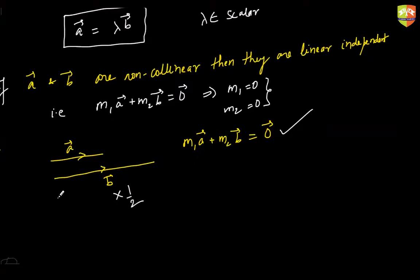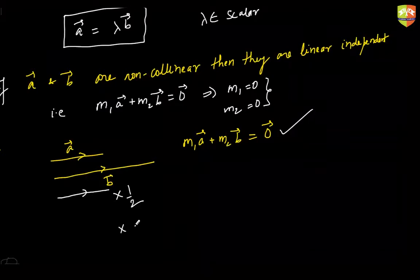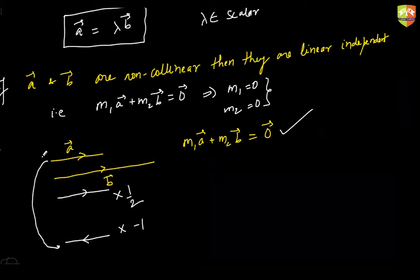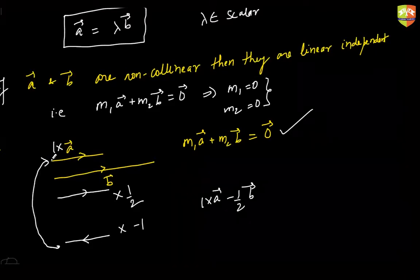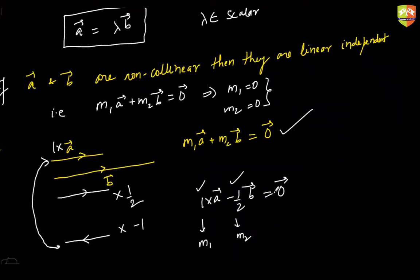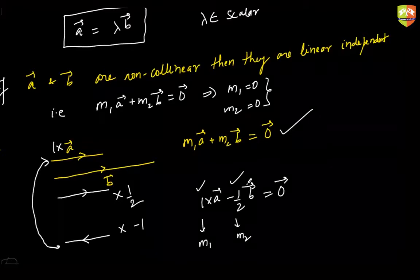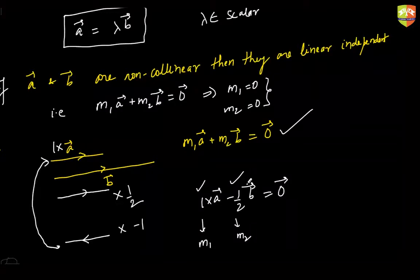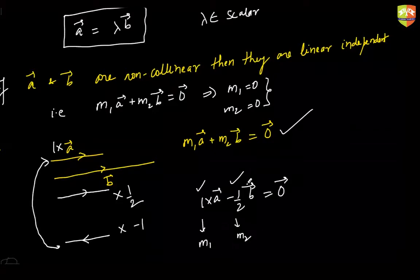Let's say b is double the length of a. I will half its length so it becomes like a, then multiply it by minus one to reverse its direction. So 1 times a plus minus-half times b — this vector and that vector will close the path and become a zero vector. So m1 and m2 here are both non-zero. It is possible to multiply collinear vectors with certain scalars so they cancel each other out — hence these vectors are linearly dependent.